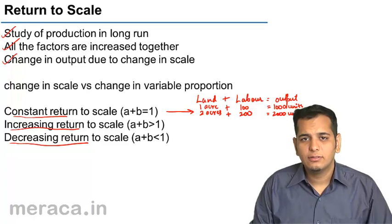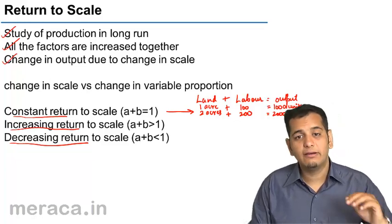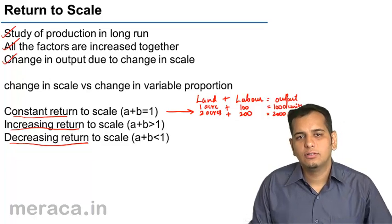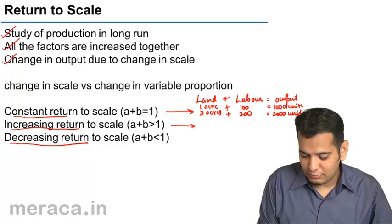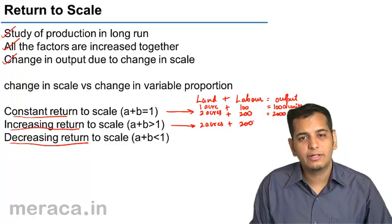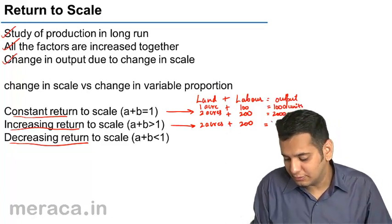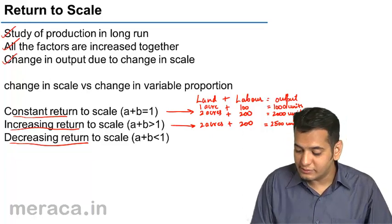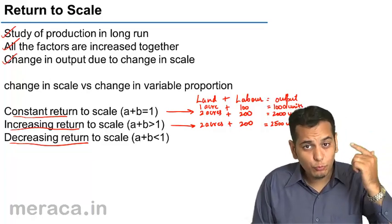Now how will we operate under the law of increasing returns to scale? In the last example we doubled our inputs and our output also doubled — that was constant returns to scale. Under increasing returns to scale, if we employ 200 laborers and 2 acres of land, this gives an output of more than double — let's say 2500 units. The output has increased by 150%, becoming 2.5 times the original, while the inputs are only 2 times, having increased by only 100%.